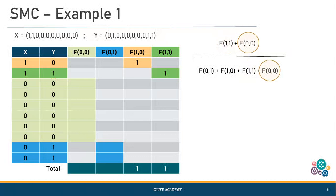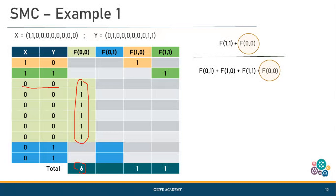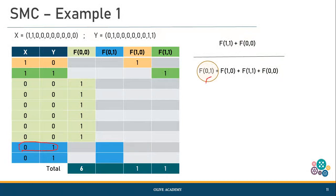For f(0,0), we have seen a combination of six 0,0s in this example, so f(0,0) equals 6, meaning there are six absences where the attribute was not available in x as well as y. Finally for f(0,1), we see two occurrences, so f(0,1) equals 2.